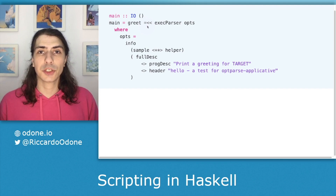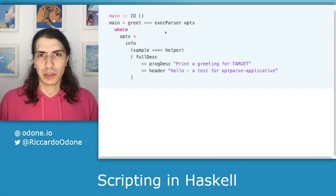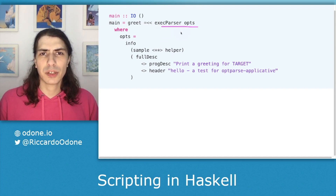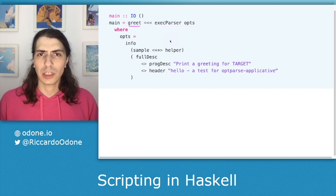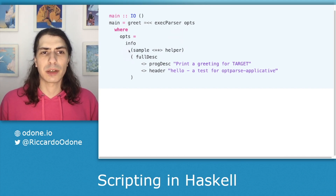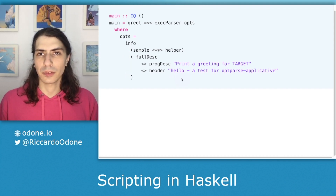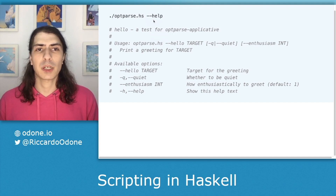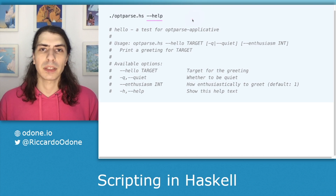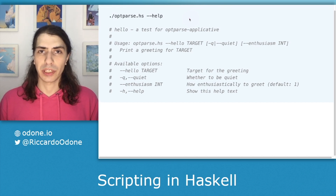And lastly, here we have the main function, which does some stuff — I just copy-pasted it from the readme of the package. The important thing here is that we execute the parser, and whenever it succeeds, we call the greet function. If it fails, optparse-applicative knows to print out the error message that we saw earlier. Also, we can customize the help message printed in the console. And I didn't show it in the first slide, but optparse-applicative gives us for free a --help command line argument, which brings a more detailed summary of what the script does and what arguments it accepts.